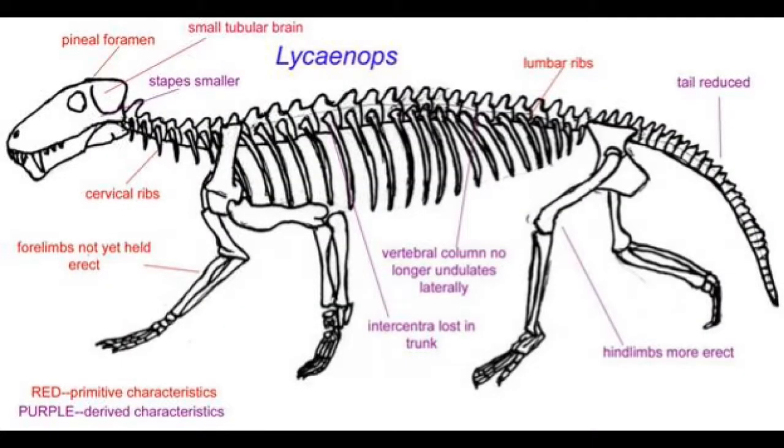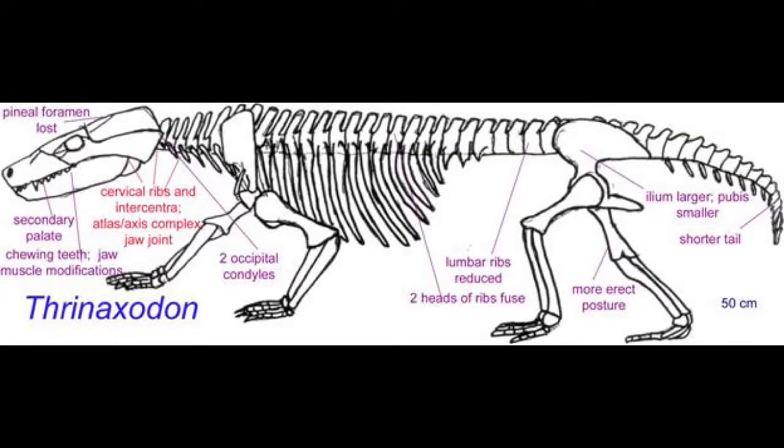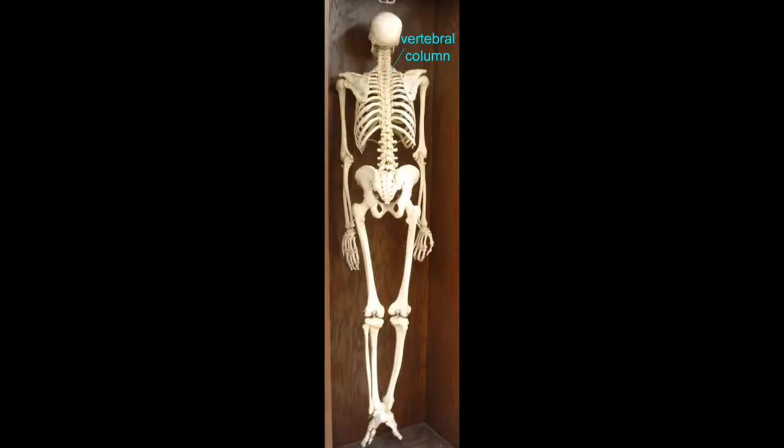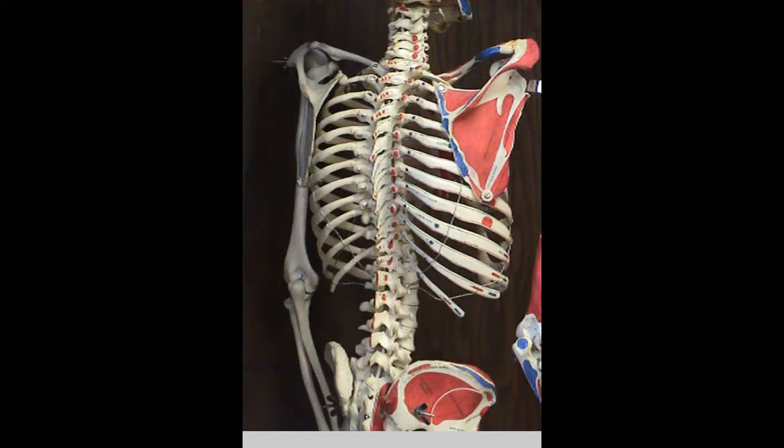Because of the higher metabolism which evolved in mammals, in addition to the enlarged brain size and upright body stance, mammals needed to take in more oxygen than their reptilian ancestors. One of the modifications which evolved was the loss of the ribs in the lower thoracic cage, creating a difference between the thoracic vertebrae which bore ribs and lumbar vertebrae in the lower back which did not.